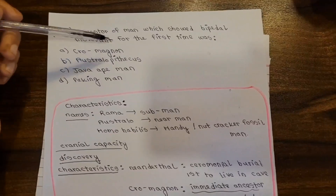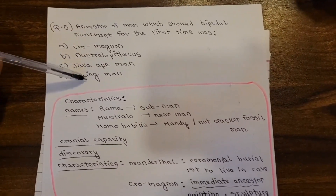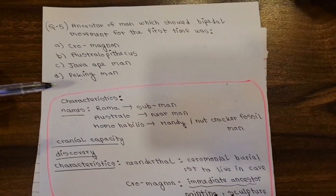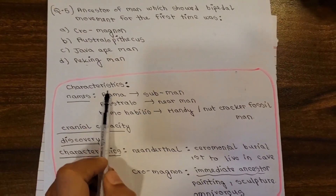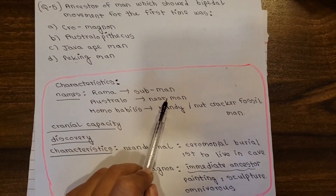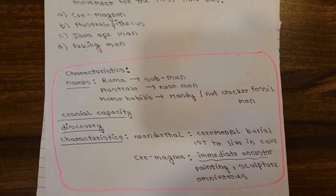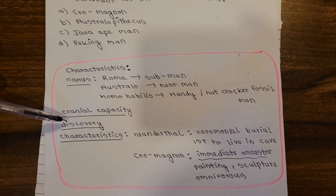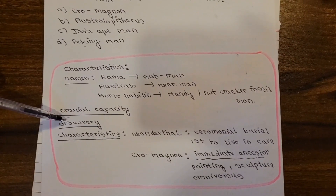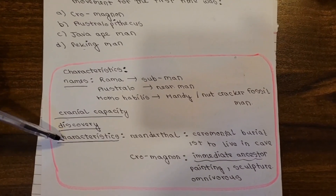Question five: which ancestor of man showed bipedal movement for the first time? Options are Cro-Magnon, Australopithecus, Java man, and Peking man. We need to remember the chart of hominids: Ramapithecus, Australopithecus — also known as near man — then Homo habilis, also known as handyman, and then further evolution. We must remember cranial capacities and major characteristics for each stage.